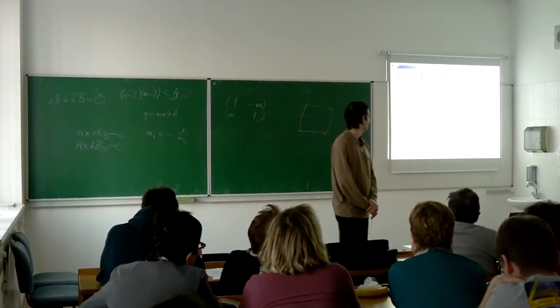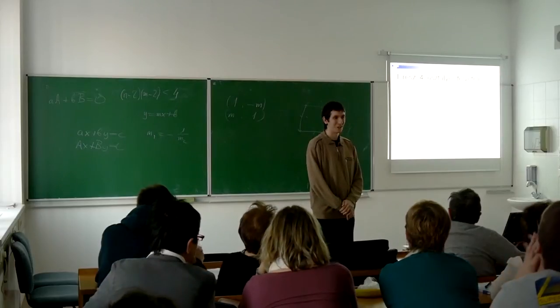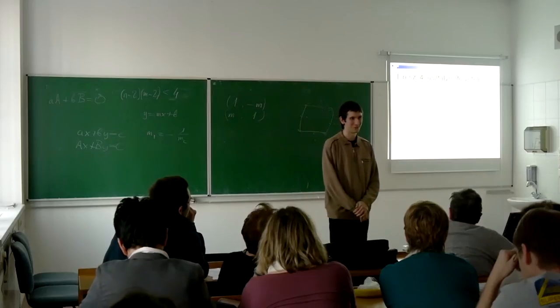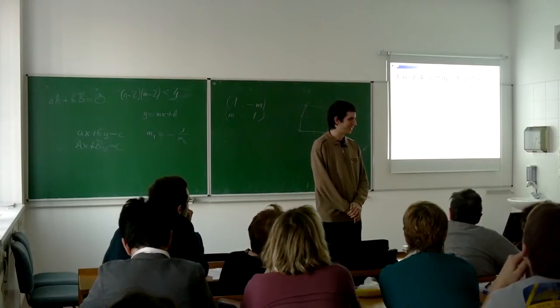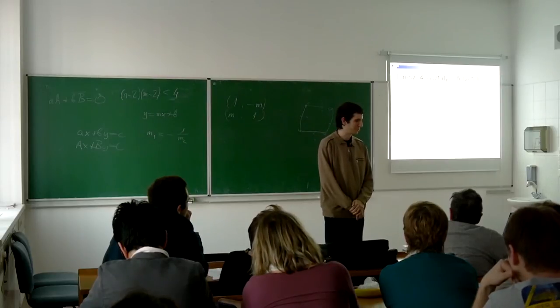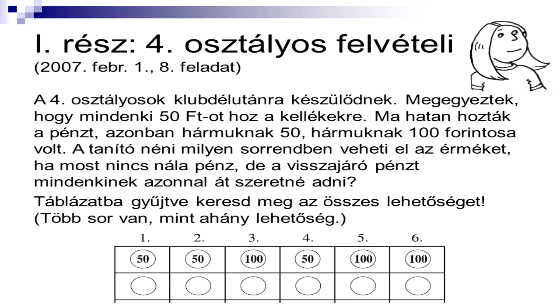Az első feladat, direkt valami drasztikusat, a negyedik osztályban, tehát tíz évesek középiskolai nyolc osztályos felvételében volt 2007-ben. Három darab 50 forintossal és három darab 100 forintossal szeretne fizetni hat ember. Mindenki 50 forintot akar pontosan kifizetni. A tanítónéninél nincsen visszajáró, és nem szeretne senkit megvárakoztatni. Például legelején nem lehet 100-assal fizetni, csak akkor, ha már van a tanítónéninél 50-es. Olyan sorrendbe kell rakni három darab 50-es és három darab 100 forintost, hogy mindenki 50 forintot fizessen, és mindig lehessen visszaadni.